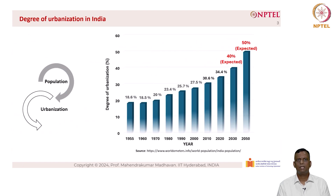At the same time, the degree of urbanization is also increasing. In 1955, the population living in urban areas was about 18.6 percent. In 2020 it came to about 34.4 percent, whereas it is expected that 50 percent of our population will live in cities by 2050, which means that 800 million people will be living in urban areas.